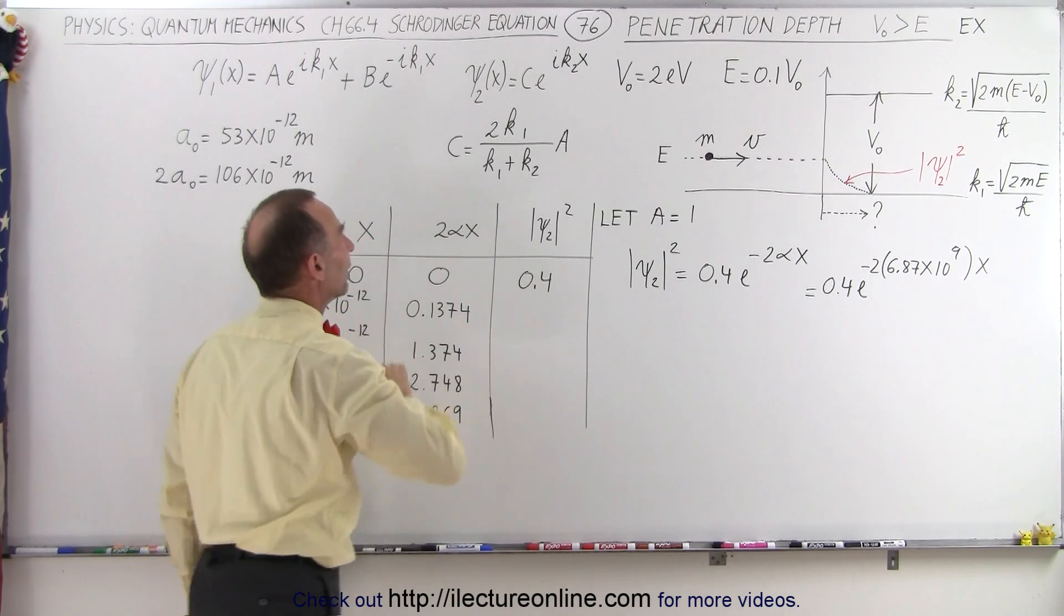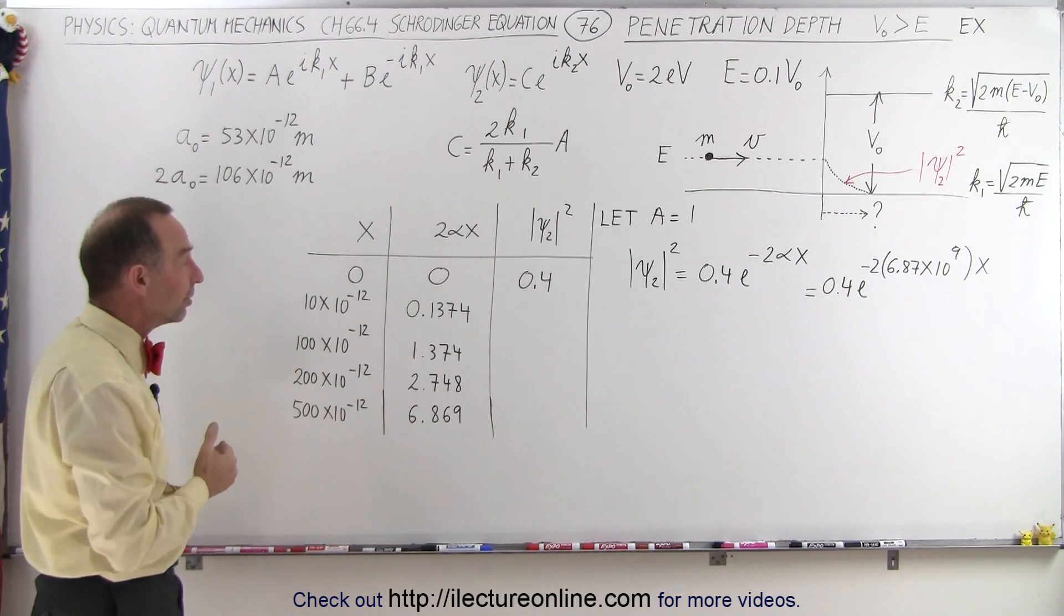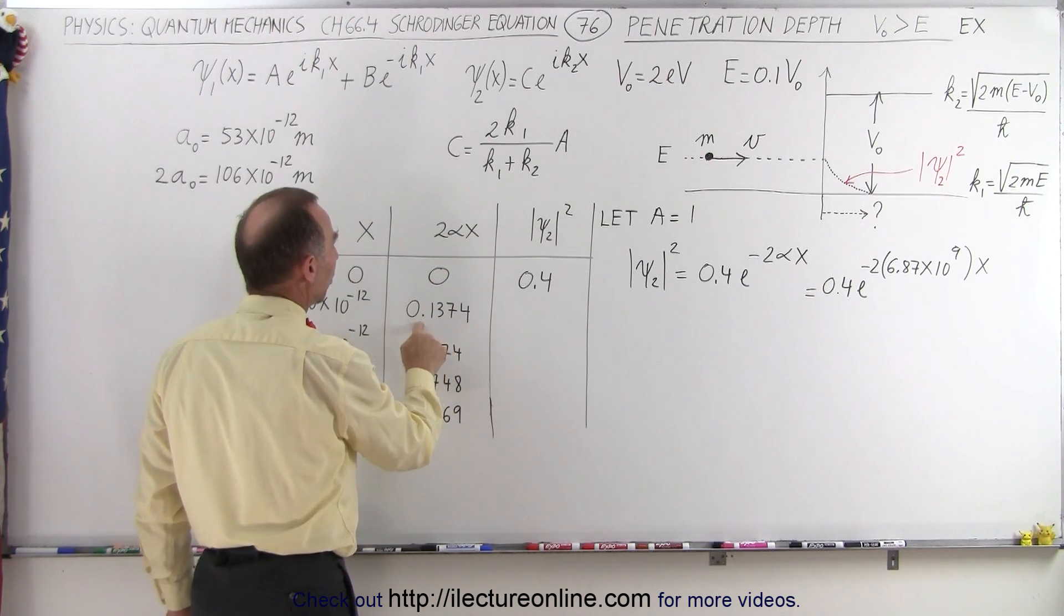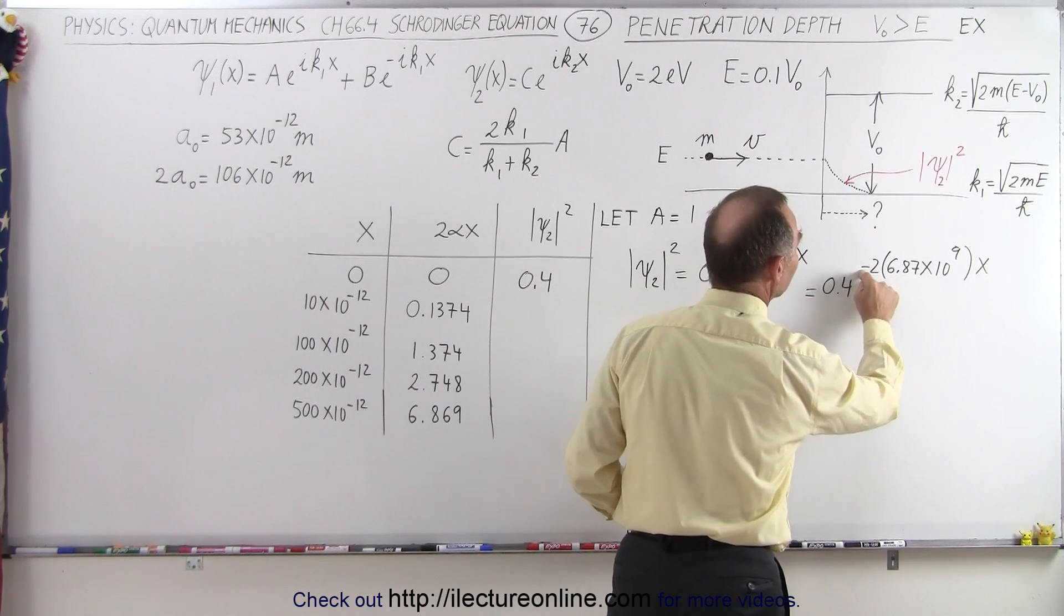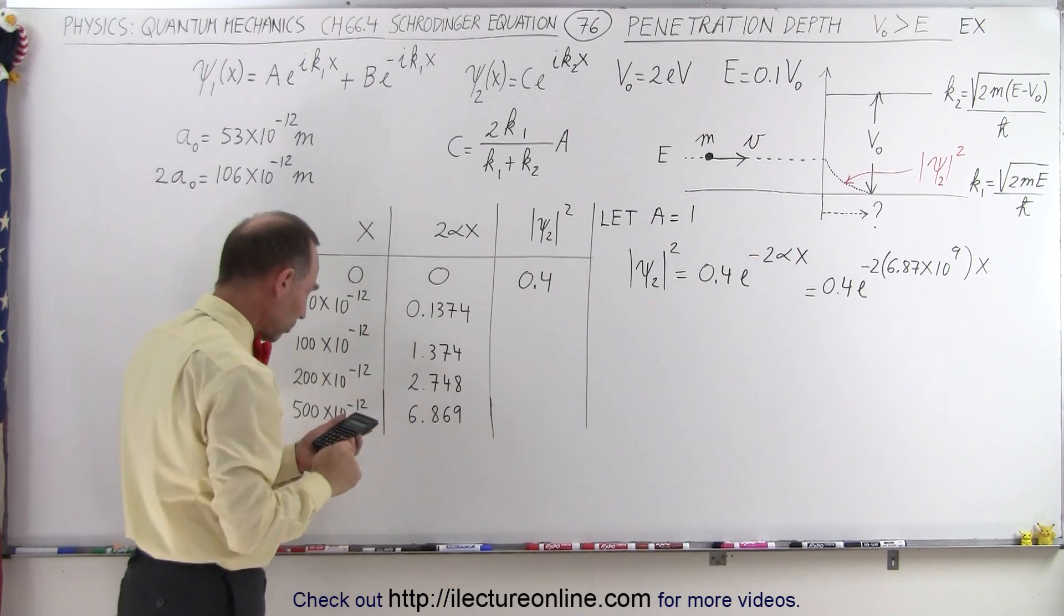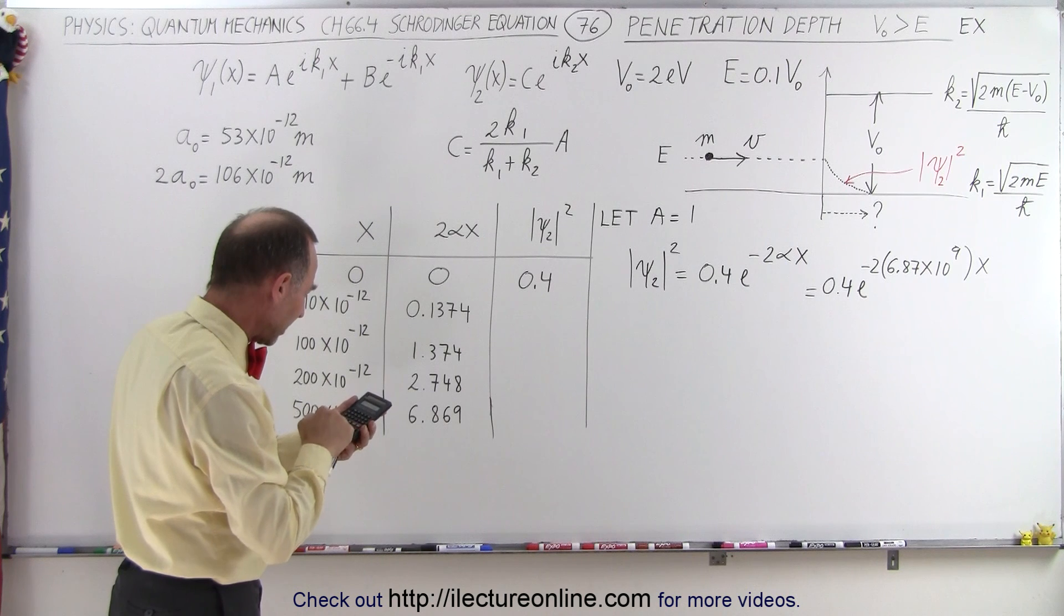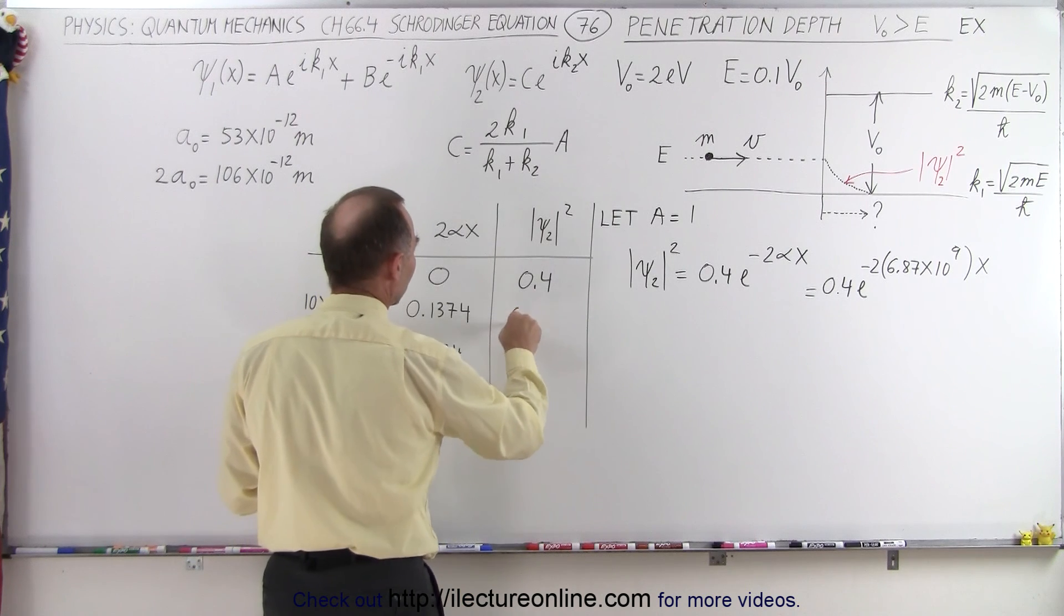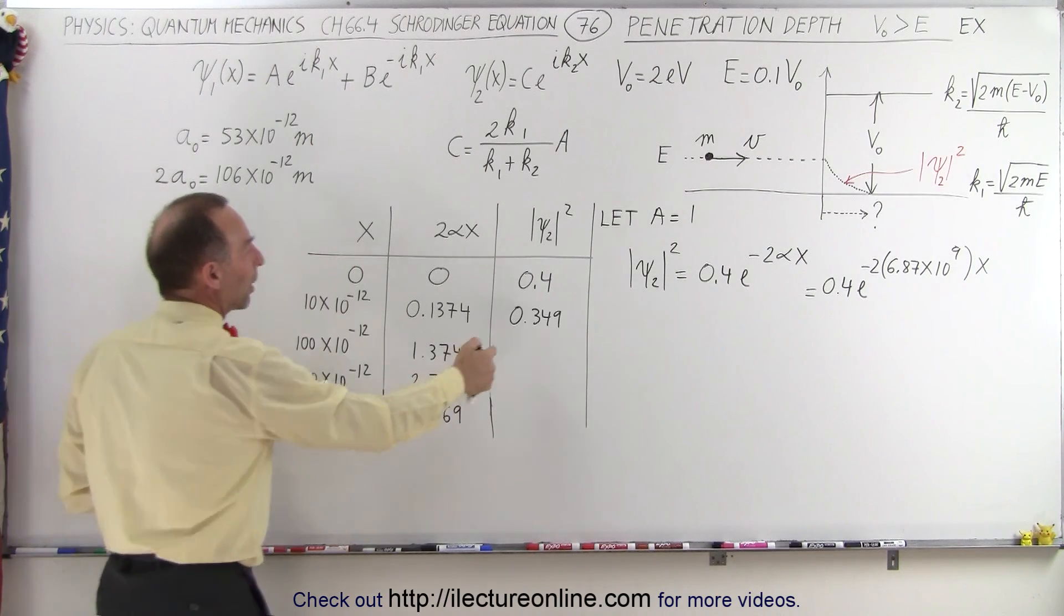Then if we let x equal 10 times 10 to the minus 12, that would be 10 picometers, which is one tenth the diameter of an atom. Then we have 2 alpha x to be equal to 0.1374. So what we need to do is take this quantity, put a negative value in front of it, make that the exponent of the number e, and then multiply times 0.4. So we take 0.1374, put a negative in front of that, use that for the exponent, and then multiply times 0.4 and we get 0.349 essentially.